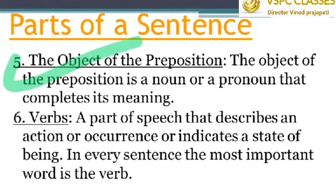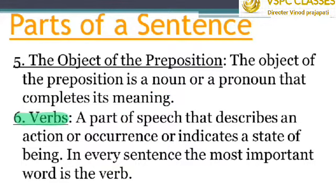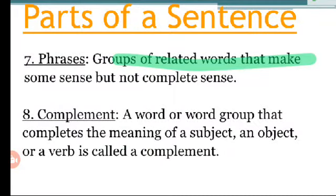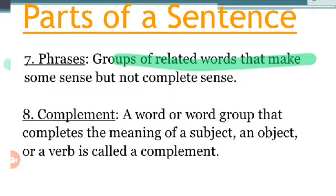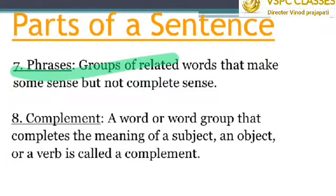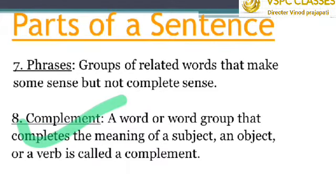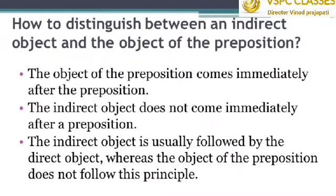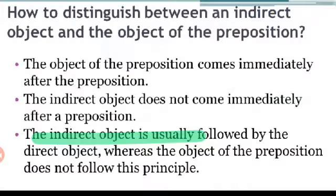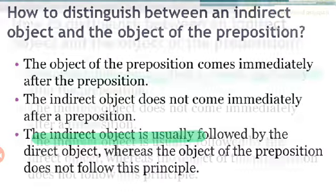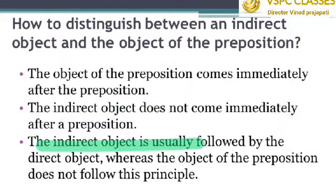Parts of a sentence, number 5: the object of preposition is a noun or a pronoun that completes the meaning of the sentence. Next is the verb — a part of speech that describes an action, occurrence, or indicates a state of being. In every sentence, the most important word is the verb itself. Next, phrases are a group of related words that make some sense but not complete sense. For phrases and complements, please refer to Sentence Types Part 1 where those are covered in detail. A complement is a word or group of words that completes the meaning of a subject, object, or verb. To distinguish: the object of preposition comes immediately after the preposition, while the indirect object does not — it is followed by the direct object.